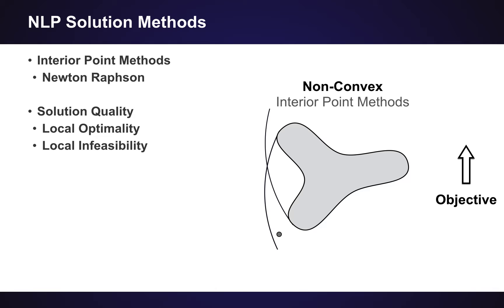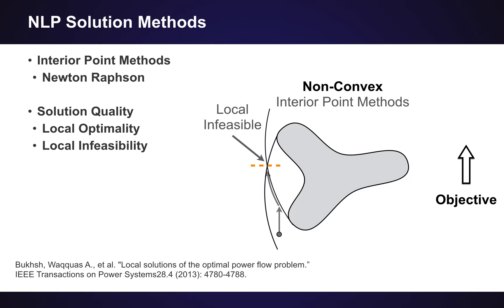So an example of how that kind of infeasibility case can happen is imagine that these curvy constraints actually extended outside of this gray region, and you started the problem here. It may follow the objective function until it hits one of those constraints, and then follow the constraint exactly and get stuck in a little wedge, which is outside of the feasible region. It never actually found the interior before it got stuck in an infeasible point. And so this type of situation can cause the solver to report an infeasible problem when in fact there's lots of useful feasible solutions out there. And if you're interested for the optimal power flow problem in a study of where this type of conditions happen, both local infeasibility and local optimality, there's a very nice transactions paper that studies this in great detail.